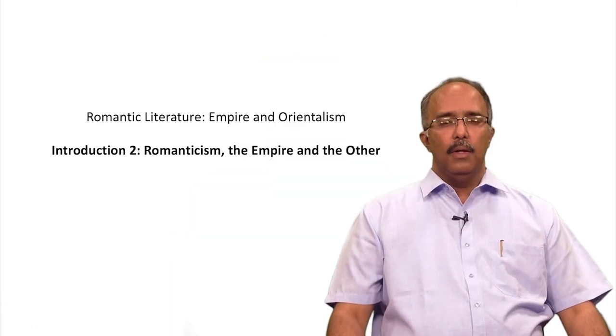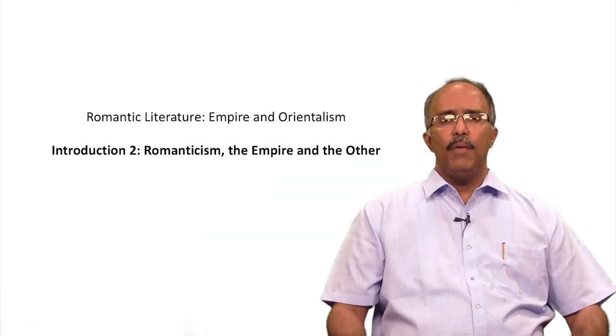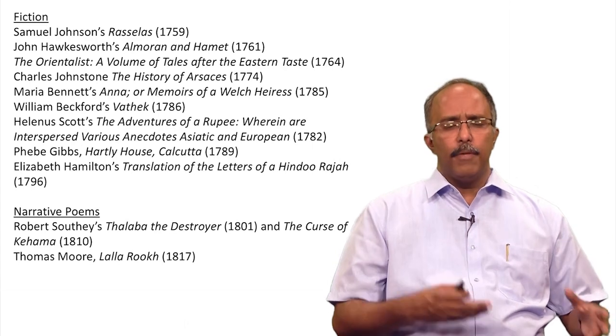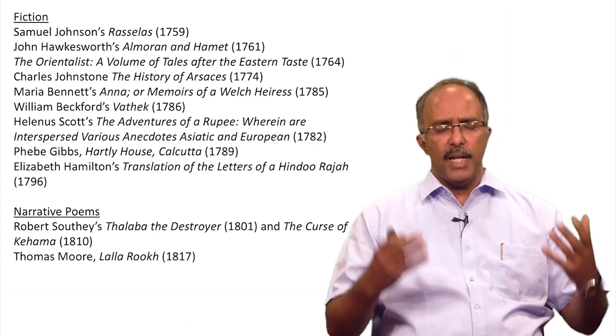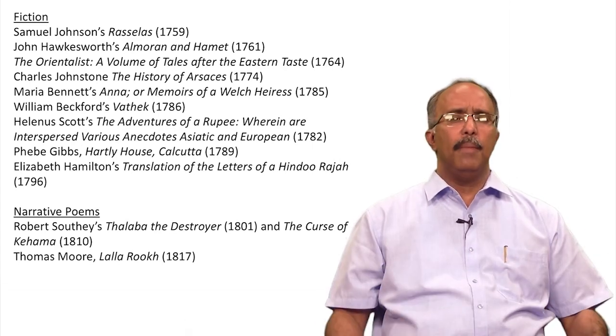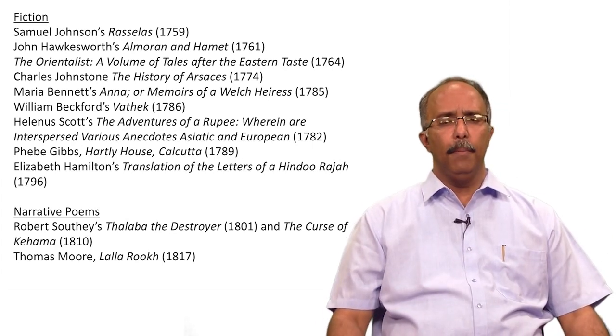Hello everybody, welcome back to our explorations of the English Romantic Writers 1798 to 1832. In the last session we spoke about Empire and Orientalism and we had a brief review of Romanticism, the Empire and the other. Today we continue that. We have a whole bunch of texts — fiction, non-fiction, narrative poems, drama produced around the theme of Empire.